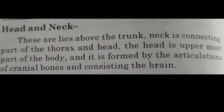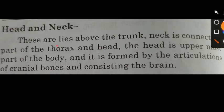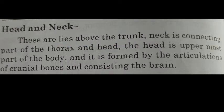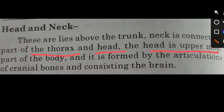The next part is head and neck, that is Shirogriva. These lie above the trunk, and the neck is the connecting part of the thorax and the head. The head is the uppermost part of the body, formed by the articulation of cranial bones and consisting of the brain.